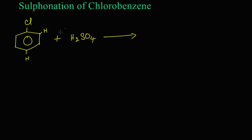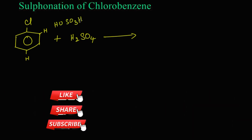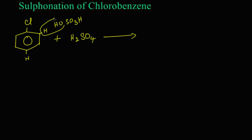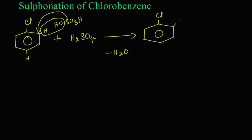For convenience, I am writing the sulfuric acid as HO and SO₃H. If the reaction takes place in the ortho position, the hydrogen from the ortho position of chlorobenzene and OH from the sulfuric acid will leave as H₂O, and the SO₃H will attach to the ortho position. So we get 2-chlorobenzene sulfonic acid.